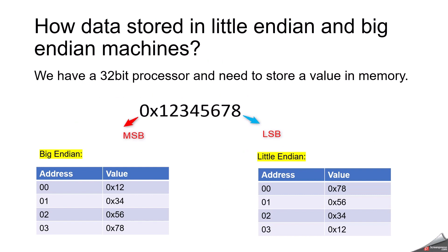Let's look at how data is stored in little-endian and big-endian machines. Consider a 32-bit processor where you need to store a value in memory. For example, take a four-byte data value: 0x12345678. Here, '12' is the MSB and '78' is the LSB.